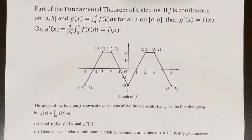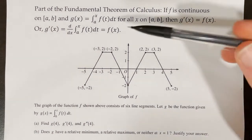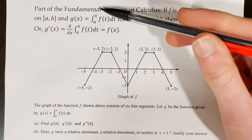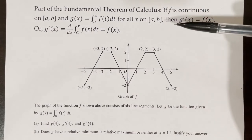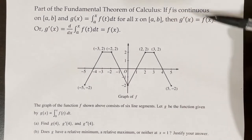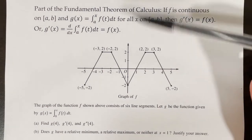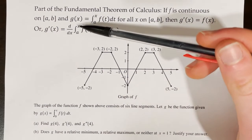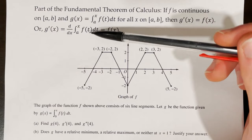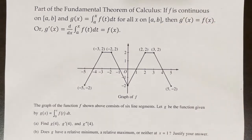Part of the fundamental theorem of calculus states that if f is continuous on the closed interval from a to b, and g of x is equal to the integral from a to x of f of t dt for all x on that closed interval from a to b, then g prime of x is equal to f of x. Or equivalently, d/dx of the integral from a to x of f of t dt equals f of x.